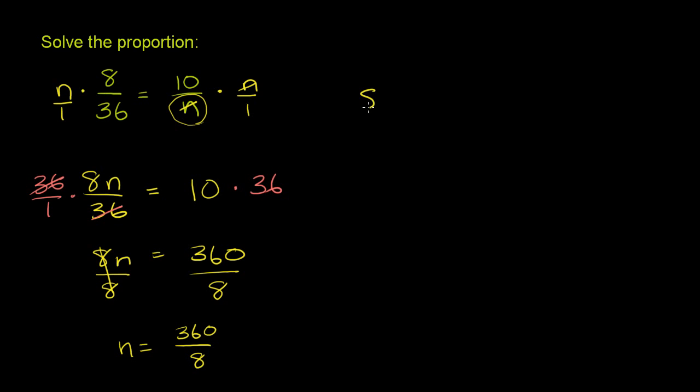And we can figure out what that actually is. 8 goes into 360. So 8 is not divisible into 3, but it's divisible into 36 four times. 4 times 8 is 32. Subtract: 6 minus 2 is 4, 3 minus 3 is nothing. Bring down the 0. 8 goes into 40 exactly 5 times. 5 times 8 is 40, and then you have no remainder.